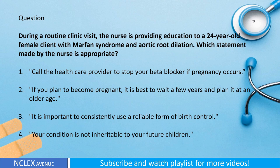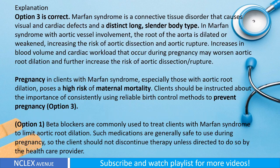Question: During a routine clinic visit, the nurse is providing education to a 24-year-old female client with Marfan syndrome and aortic root dilation. Which statement made by the nurse is appropriate? One: Call the health care provider to stop your beta blocker if pregnancy occurs. Two: If you plan to become pregnant, it is best to wait a few years and plan it at an older age. Three: It is important to consistently use a reliable form of birth control. Four: Your condition is not inheritable to your future children. Explanation: Option three is correct.